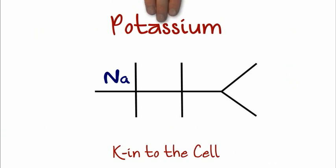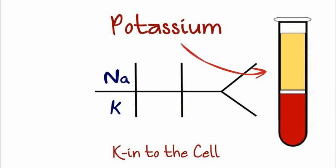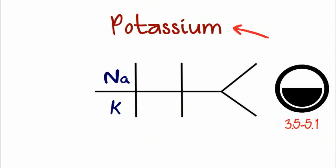In our next section, we have potassium, or K, inside the cell, kin to the cell. But remember the plasma? There's very little in the plasma, and that's why it's so important to keep it regulated. And both are acute.